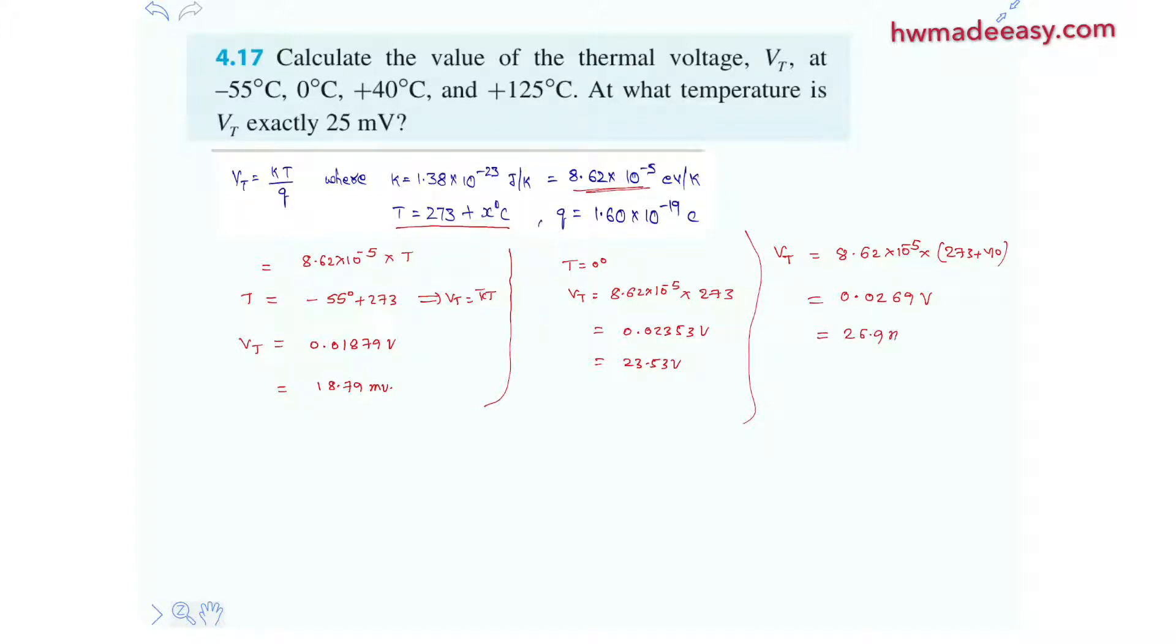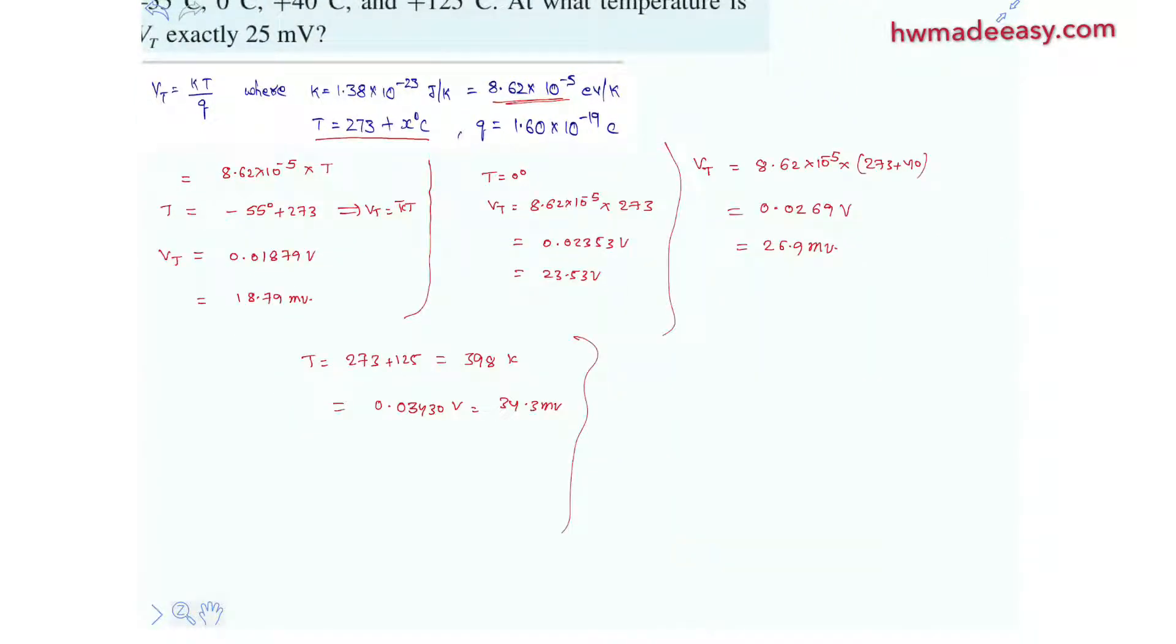At plus 125 degrees celsius, 273 plus 125 is 398 kelvin. At this value we'll get 0.03430 volt, it's nothing but 34.3 millivolt. And here is asking one more thing also, at what temperature Vt is exactly 25 millivolts.